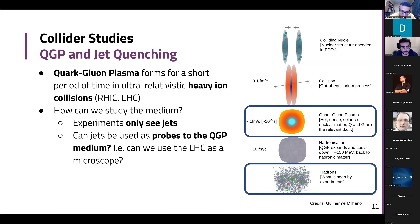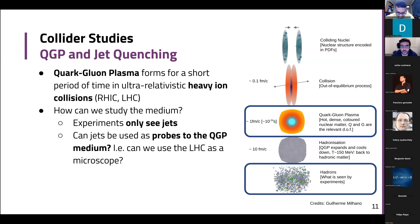I'm going to introduce to you the quark-gluon plasma and jet quenching at a level that even I understand, so hopefully you will too. The quark-gluon plasma is a state of matter that can form in heavy-ion collisions. This has been observed already in the relativistic heavy-ion collider, and now at the LHC.